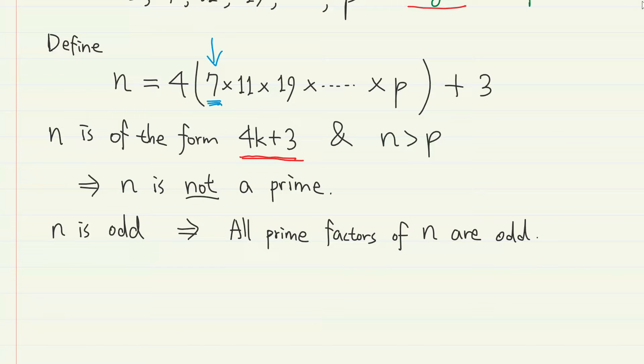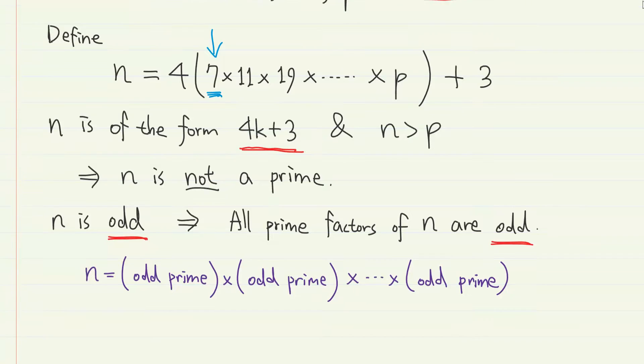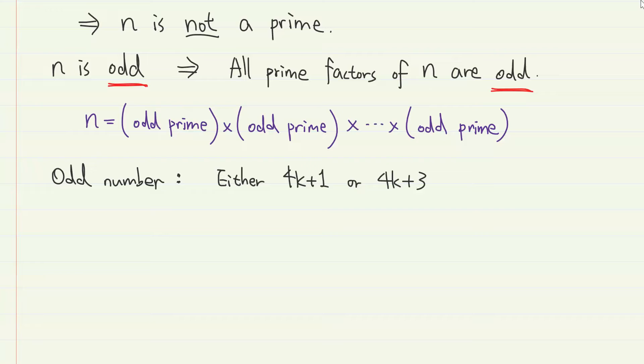Moreover, n is odd, so all of the prime factors of n are odd. This means that n can be expressed as a finite product of a bunch of odd prime numbers. And since all odd numbers are of the form 4k plus 1 or 4k plus 3,